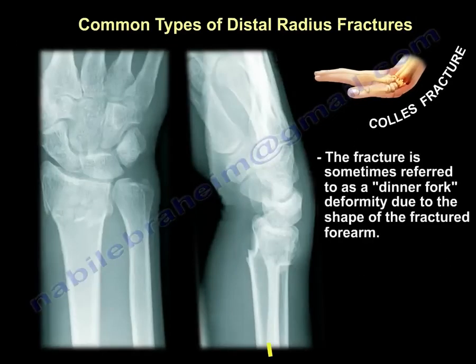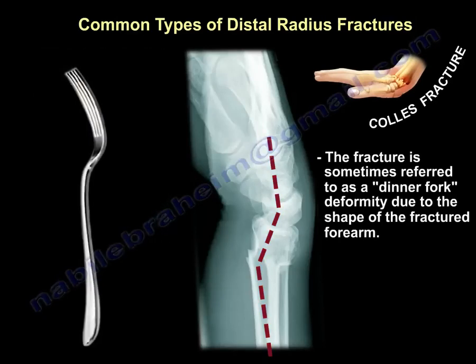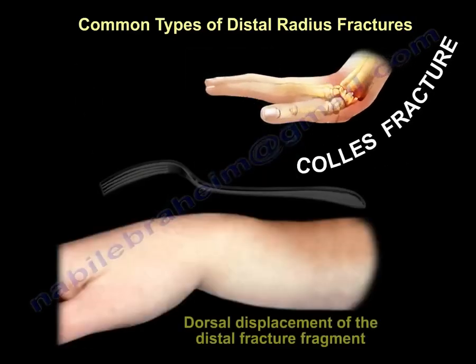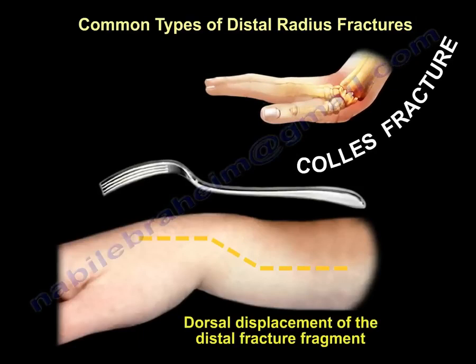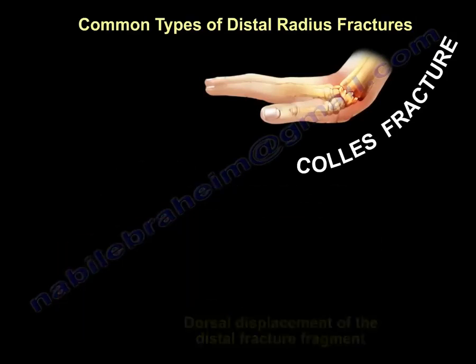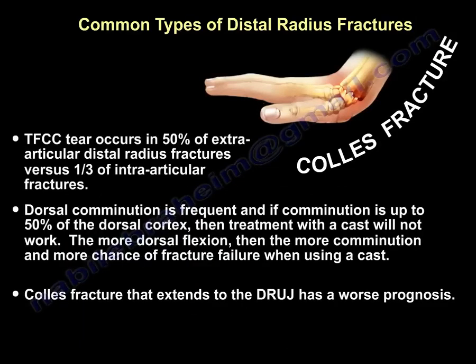The fracture is sometimes referred to as a dinner fork deformity fracture due to the shape of the fractured forearm. You can see that the deformity looks like a dinner fork, with dorsal displacement of the distal fragment. TFCC tears occur in about 50 percent of extra-articular distal radius fractures versus one-third in intra-articular fractures.